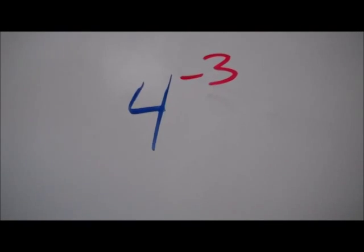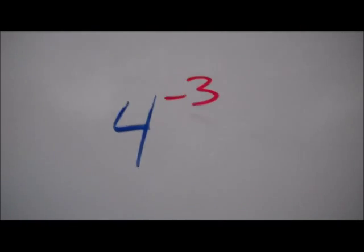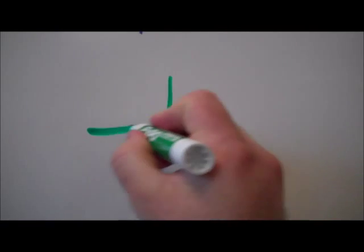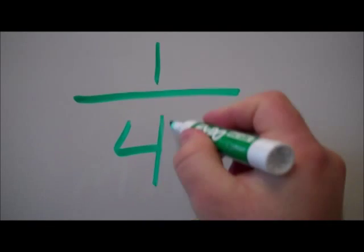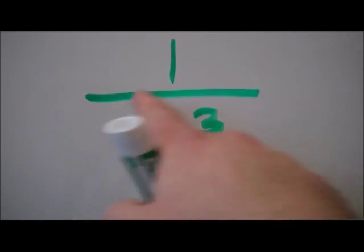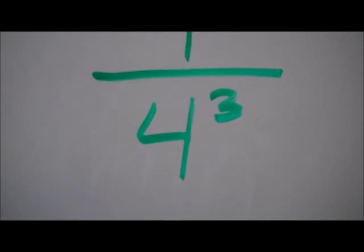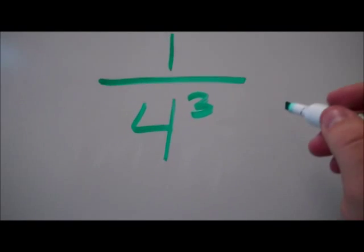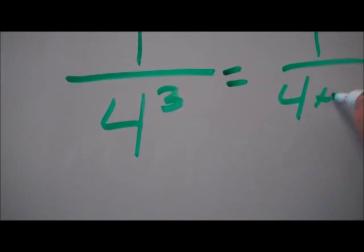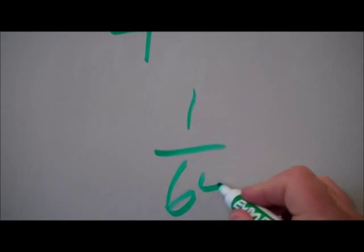First problem here is 4 to the negative third power. Remember, anytime we have a negative power, it's the same thing as writing 1 over 4 to the third. I just take the negative, get rid of it, and I make a 1 over my original power equation. So 1 over 4 to the third is the same thing as 1 over 4 times 4 times 4, or 1 over 64.